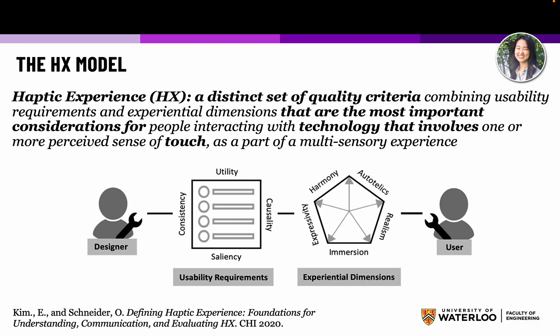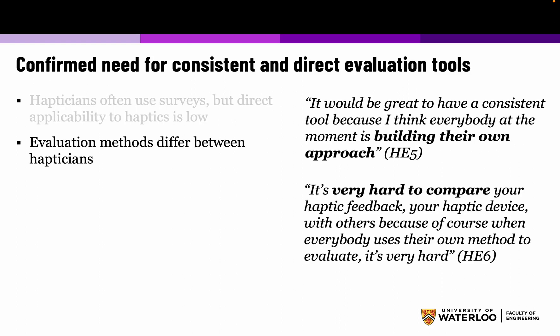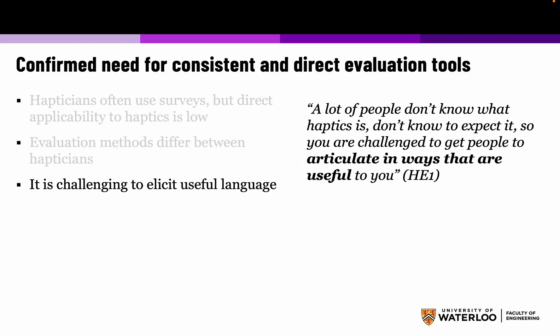We articulated both the hedonic experiential dimensions and certain usability requirements, which are like established usability requirements in general user interfaces but with a bit of a twist. We also confirmed the need for consistent and direct evaluation tools. Hapticians often use surveys, but direct applicability to haptics is low. Evaluation methods often differ between hapticians — everyone is building their own approach, making it very hard to compare haptic feedback across devices. We also found that it is challenging to elicit useful language, as many people don't know what haptics is.